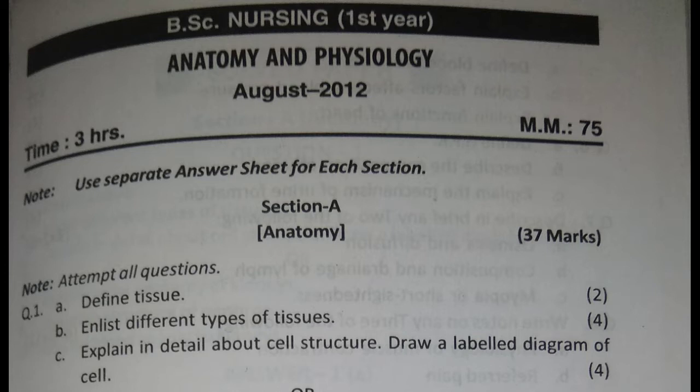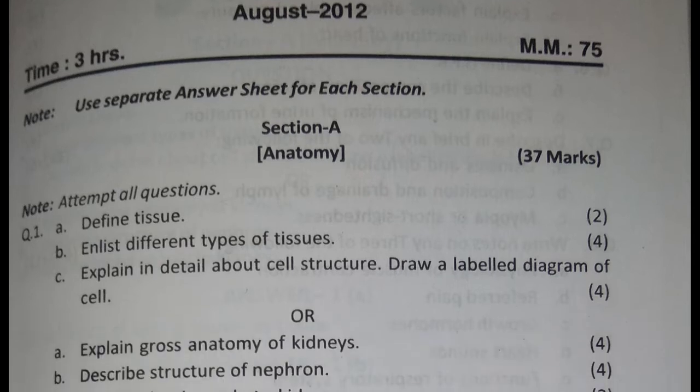Note: use a separate answer sheet for each section. Section A: Anatomy, 37 marks. Note: attempt all questions.